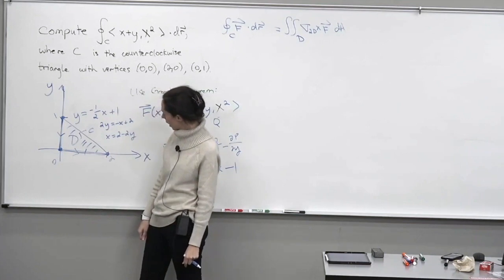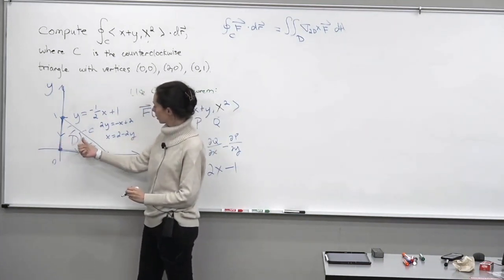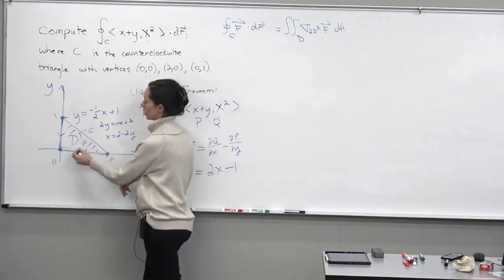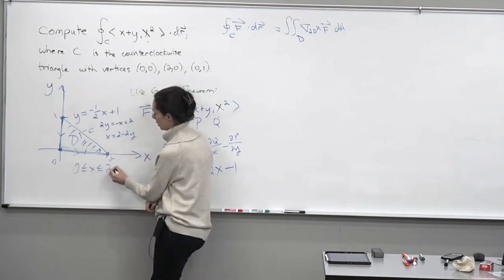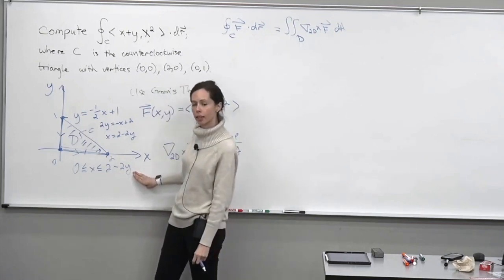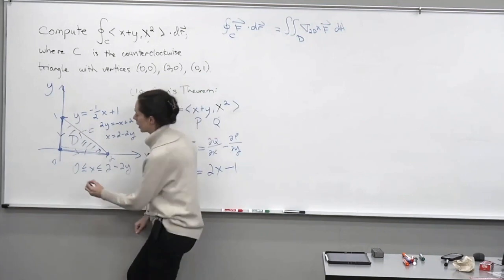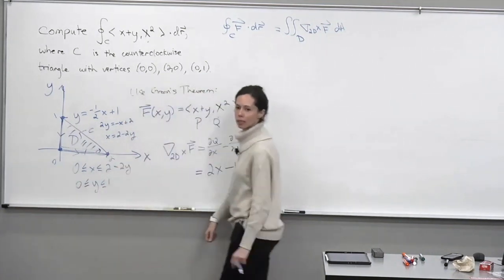So to describe this region, I'm going to say that 0 is less than or equal to x is less than or equal to 2 minus 2y. So as we travel through this region in the direction of increasing x, we go from 0 to that line. That will be the bounds of the inside integral. And then for the outer bounds, we see that y is between 0 and 1. So this pair of inequalities describes our region D.